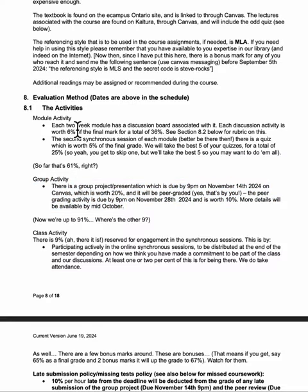So far we've got tests and discussions totalling 61%. The next component is a group activity - a presentation, and possibly a document as well, I haven't quite decided yet - due in November and worth 20%. You'll work in groups which I will assign to you, and you'll put together a presentation to discuss something related to the course and the SDGs. That's worth 20%, and then there's another 10% because you get to peer grade each other based on the quality of comments you make.